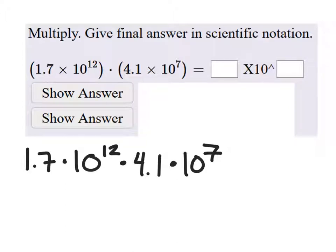It's just straight multiplication, which means we can use the commutative property to move stuff close to each other, like 1.7 and the 4.1. And then we can multiply all that by 10 to the power of 12 times 10 to the power of 7.